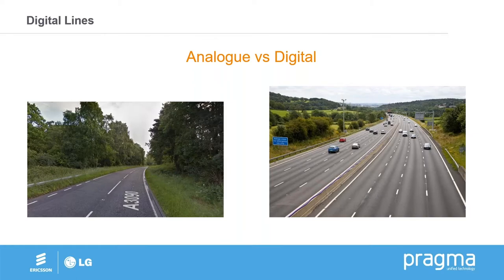Analog versus digital. Just to give you an idea to compare it for customers, an example we use is A-roads and motorways. With an A-road, there's only one lane, so you can only have one car at a time — same with analog: you've only got one line, so you can only have one call at a time. With motorways and ISDN, you've got multiple lanes or multiple channels, so you can have more than one car or more than one call at the same time. That's a good example of how we put it forward to customers.